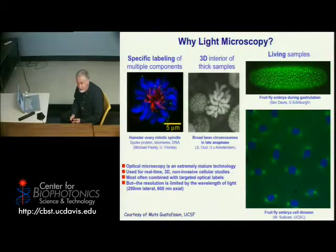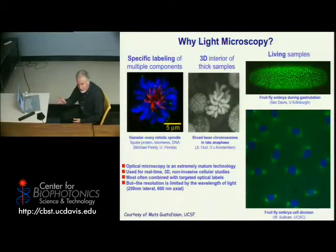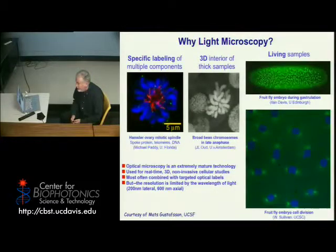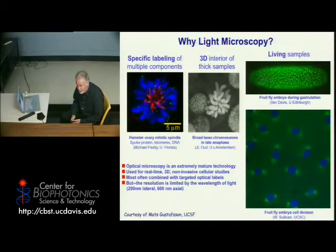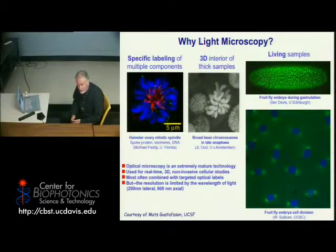You can use different color labels to image different structures, so you can get a multicolored image like this one — apparently a hamster ovary cell, labeling chromosomes where the telomeres are in green and the spoke proteins that pull chromosomes apart are in red. For the most part, except for ultraviolet light, light doesn't have enough energy to break bonds or ionize, so you can look at things for hours or days — that's one of the huge advantages.